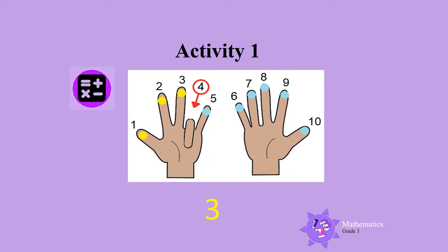There are 6 fingers to the right of the bent finger. These fingers are marked blue, so there are 6 ones. There are 3 tens and 6 ones. This makes the number 36.